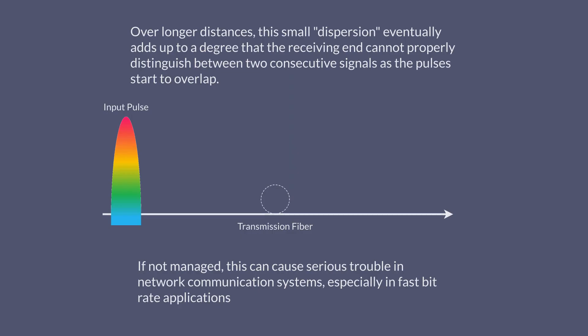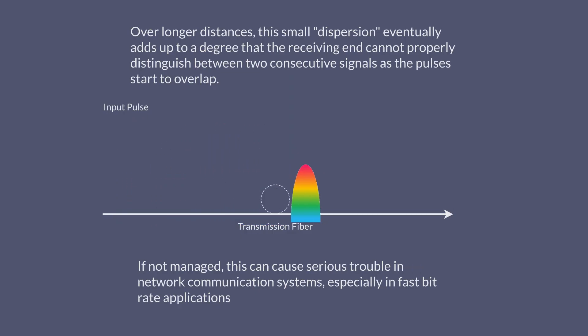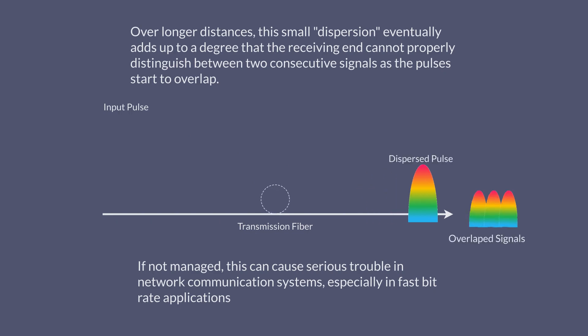Over longer distances, this small dispersion eventually adds up to a degree that the receiving end cannot properly distinguish between two consecutive signals, as the pulses start to overlap.